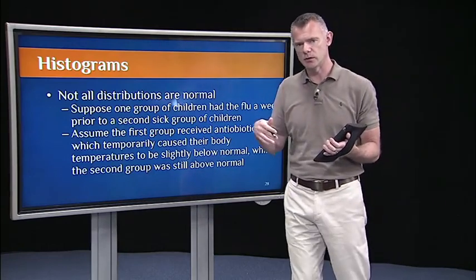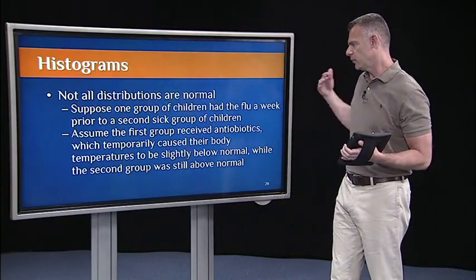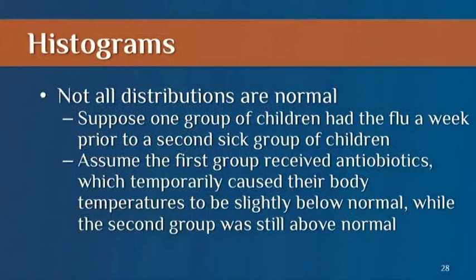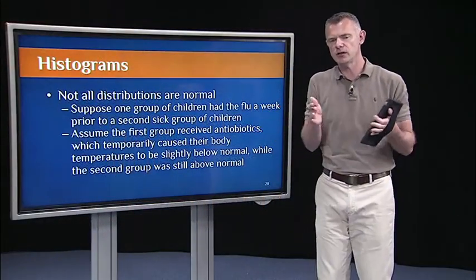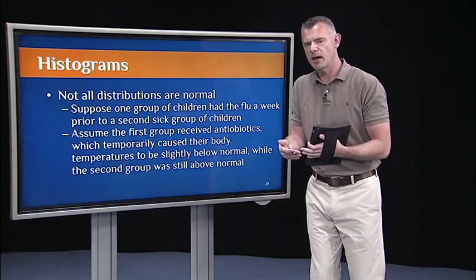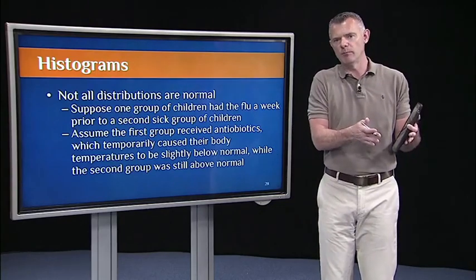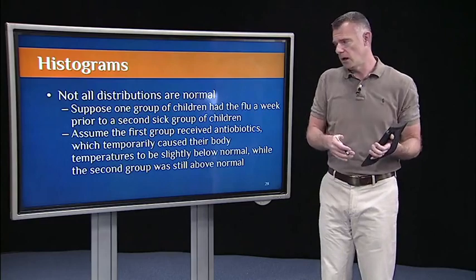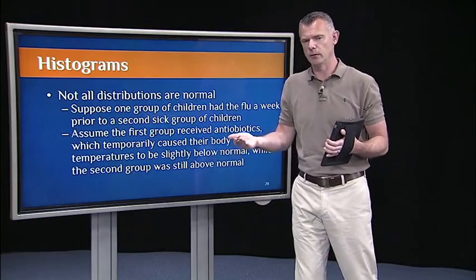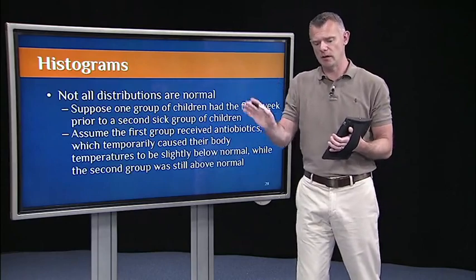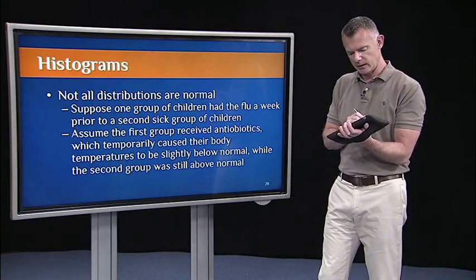Let's run with the body temperature example. Say we have one group of children where the entire class got the flu, and then they were treated with antibiotics. One thing that can happen with antibiotics is it can actually suppress your body temperature a bit. So after getting the antibiotics, that group of children's body temperatures might be a little below average. Then let's compare them to a second classroom of kids who also got infected with the flu but maybe a week later, so their body temperatures are still high.